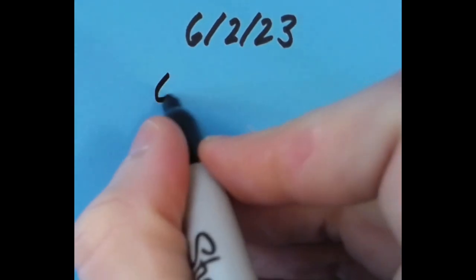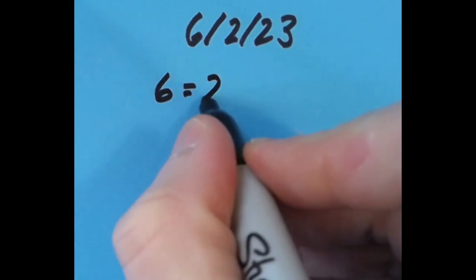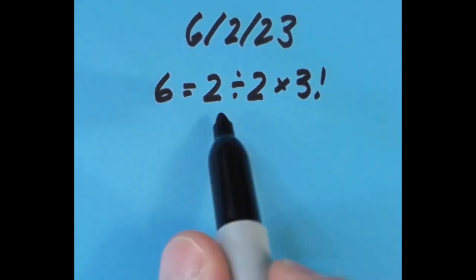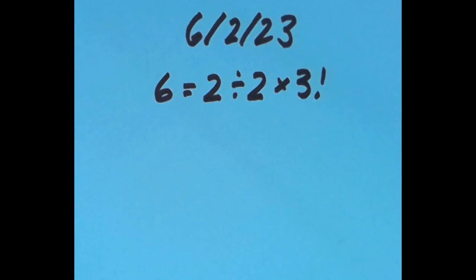What I came up with is that 6 equals 2 divided by 2 times 3 factorial. Now 3 factorial is 6, and so we have 1 times 6 giving us 6.